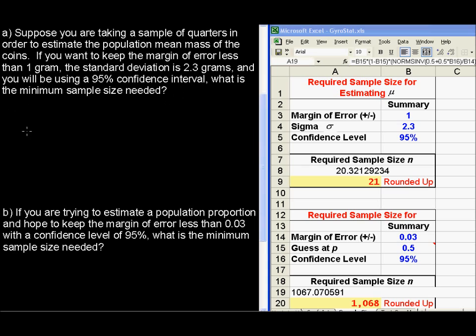First of all, let's understand the formula for the sample size needed. If you solve that margin of error formula, you get the sample size n that's needed equals z, your z-score, multiplied by the standard deviation divided by the margin of error, and this whole thing is squared.